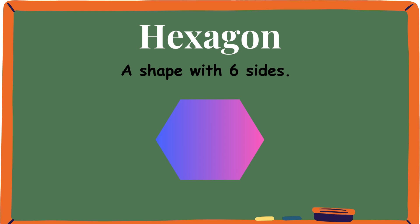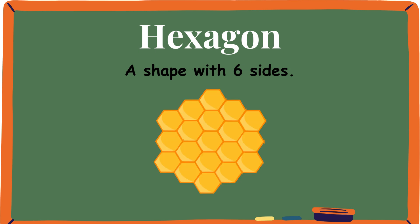Hexagon. A shape with six sides. This honeycomb is a hexagon because it has six sides as well.